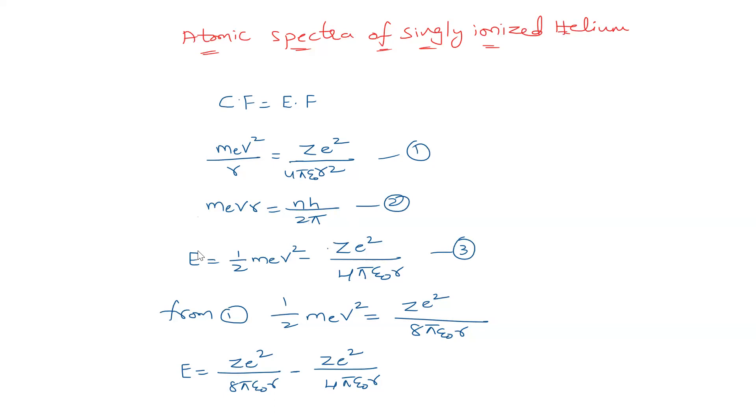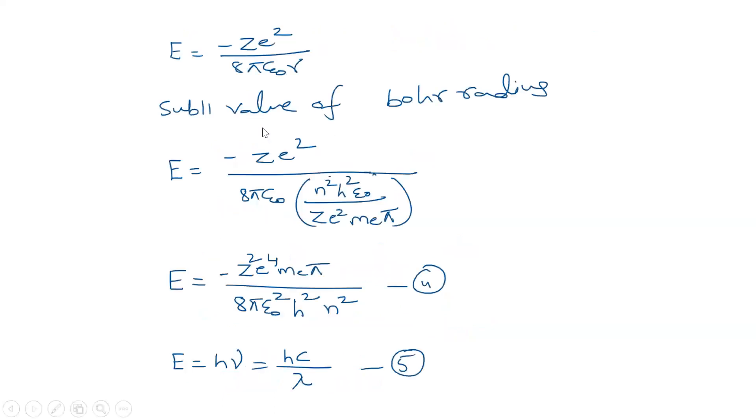The total energy will be equal to half mv squared minus Ze squared by 4 pi epsilon r. This is the third equation and from equation 1 we can see that when we take r to this side denominator squared will go and when we multiply with half the denominator it will be 8 pi epsilon r squared.